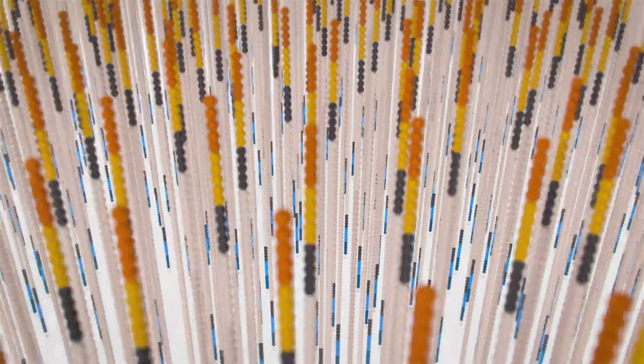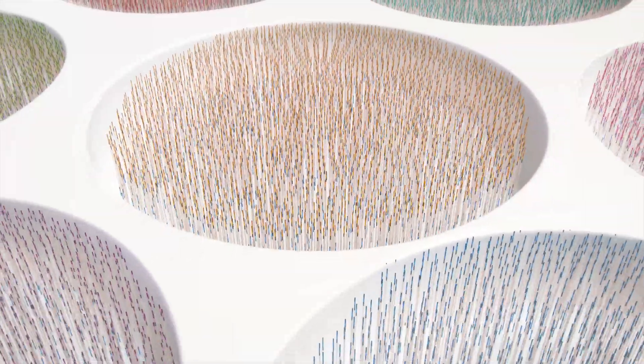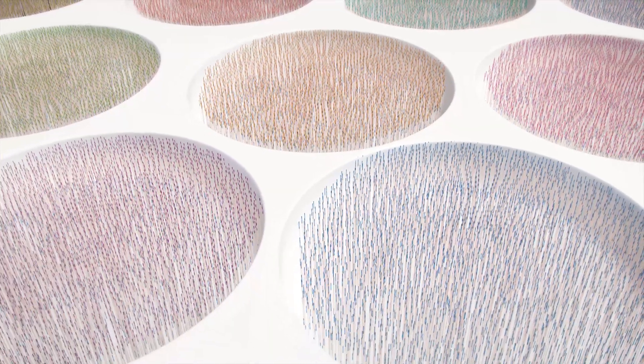All identical sequence strands in a given cluster are read simultaneously. Hundreds of millions up to billions of clusters are sequenced in a massively parallel process. This image represents a small fraction of the flow cell. After the completion of the first read, the read product is washed away.